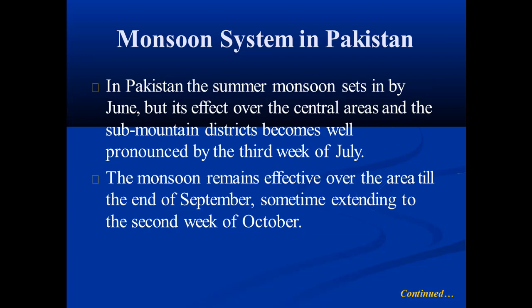In Pakistan, the summer monsoon sets in by June, but its effect over the central areas and the sub-mountain districts becomes well-pronounced by the third week of July. The monsoon remains effective over the area till the end of September, sometimes extending to the second week of October.